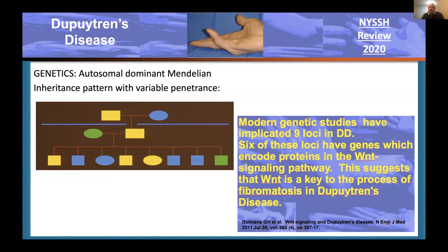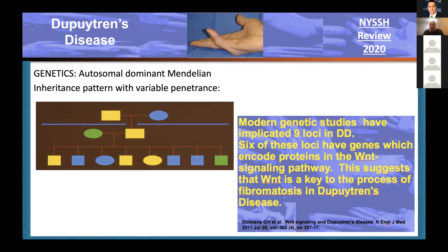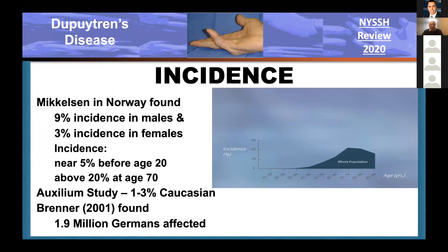The genetics have always been thought to be an autosomal dominant Mendelian inheritance pattern with variable penetrance. Recent studies show this is much more complicated. We are involved with an international study looking at the genome—there are nine loci involved, and six of these have to do with the Wnt pathway, which is a serious predictor of fibromatosis and Dupuytren's disease. A Norwegian study showed 9% of males had it, 3% of females. A more recent Auxilium study in the United States showed a 1% to 3% incidence in Caucasians.